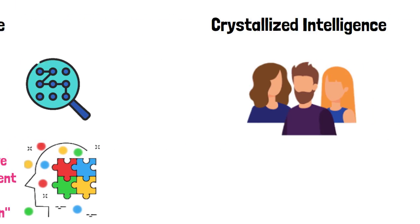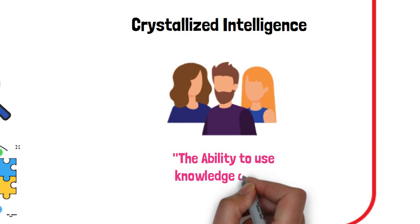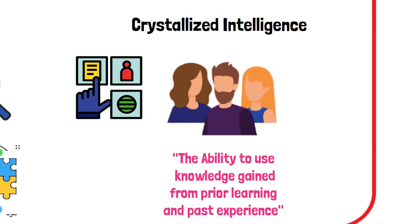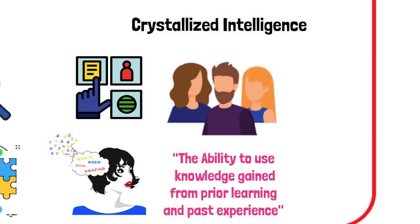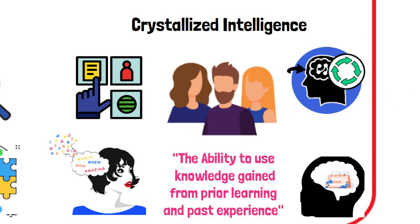Crystallized intelligence involves knowledge gained from prior learning and past experience. It encompasses all the facts, figures, and accumulated knowledge acquired over a lifetime that you can recall and use as needed. Examples of crystallized intelligence include memorizing text and vocabulary, recalling learned skills, and remembering dates and locations.